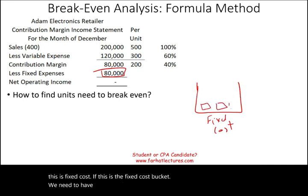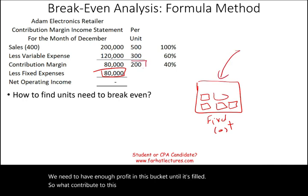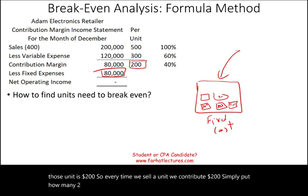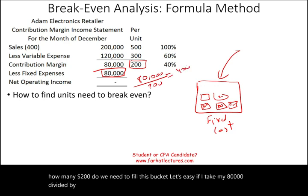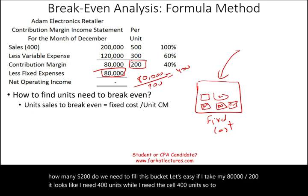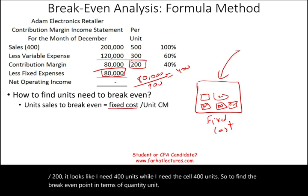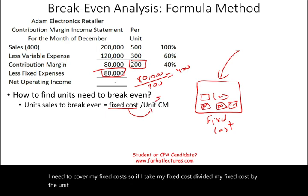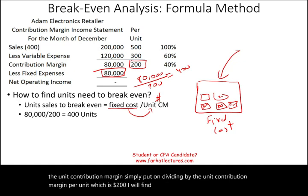We need to fill the fixed cost bucket with contribution margin. Each unit contributes $200. How many $200s do we need? $80,000 divided by $200 gives us 400 units. So the break-even formula in units is: fixed cost divided by contribution margin per unit. Dividing by the unit contribution margin of $200 gives us the break-even quantity.